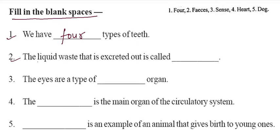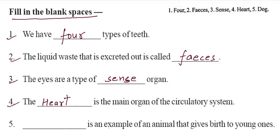Second, liquid that goes to the stomach is called something. The excretion is called feces. Third, the eyes are a type of sense organ. Fourth, the heart is the main organ of the circulatory system. Fifth, an example of an animal that gives birth to young ones is a dog.